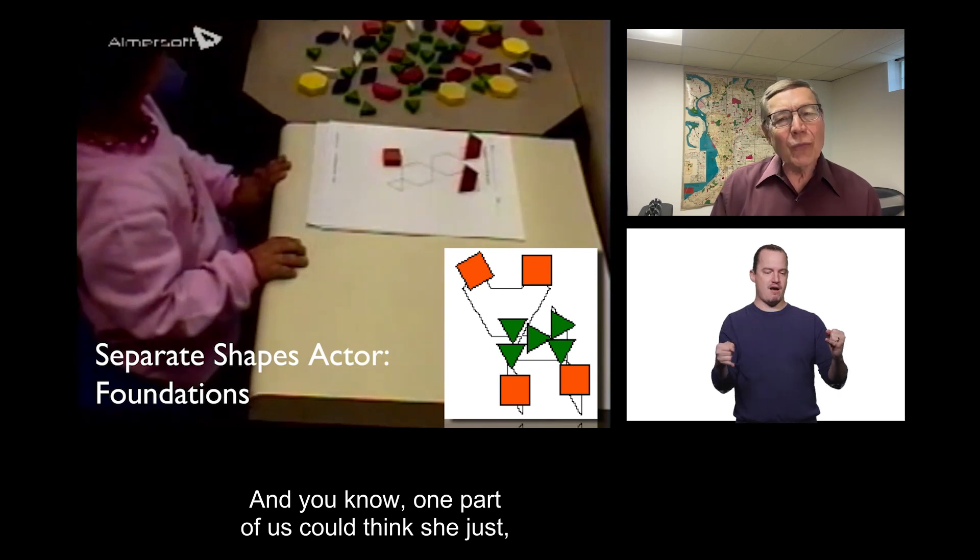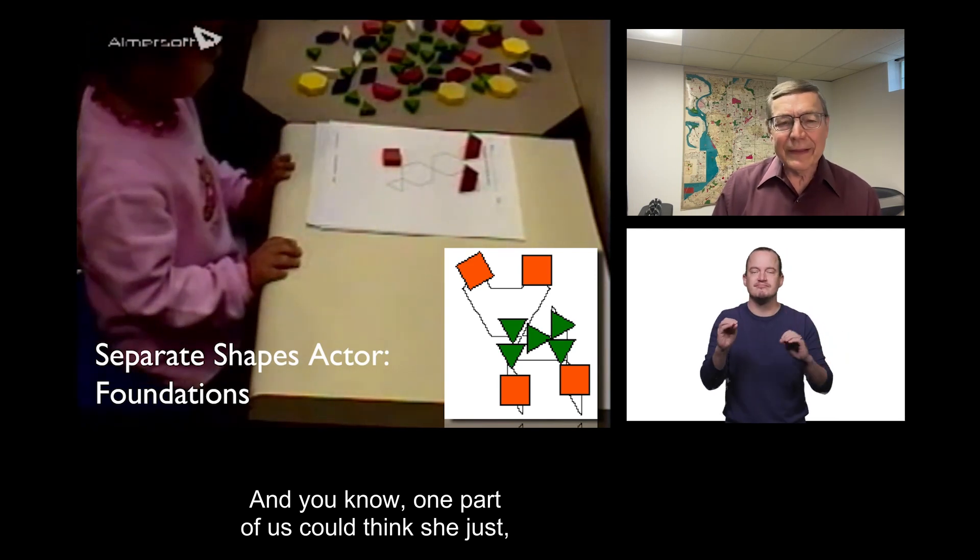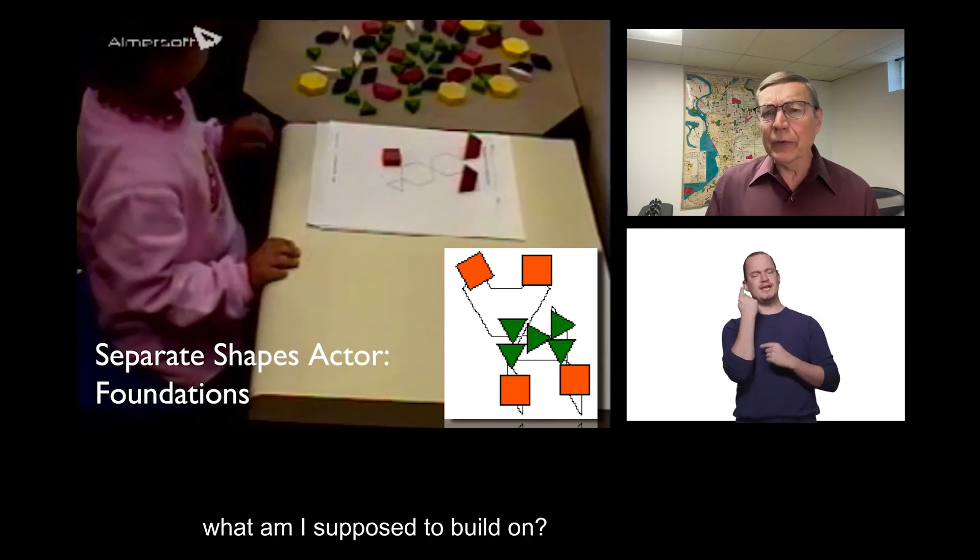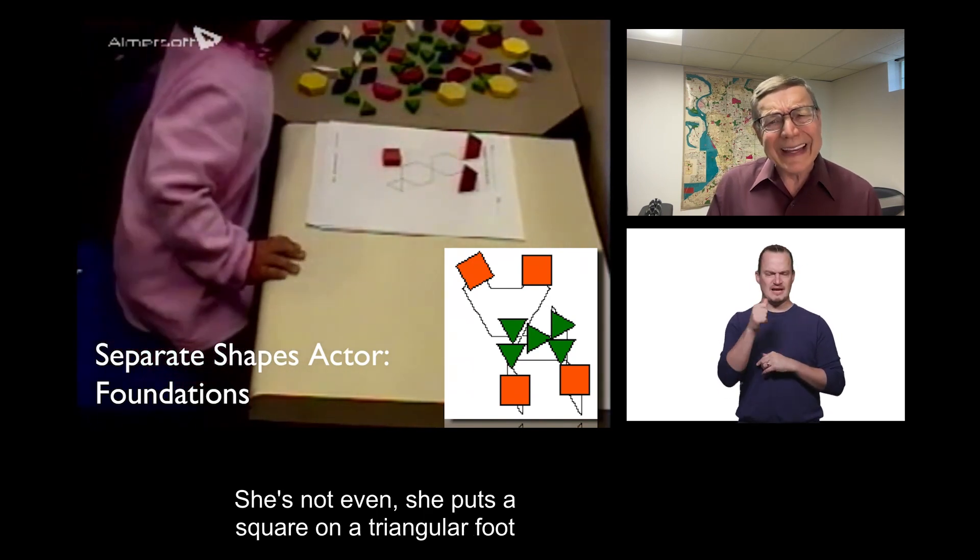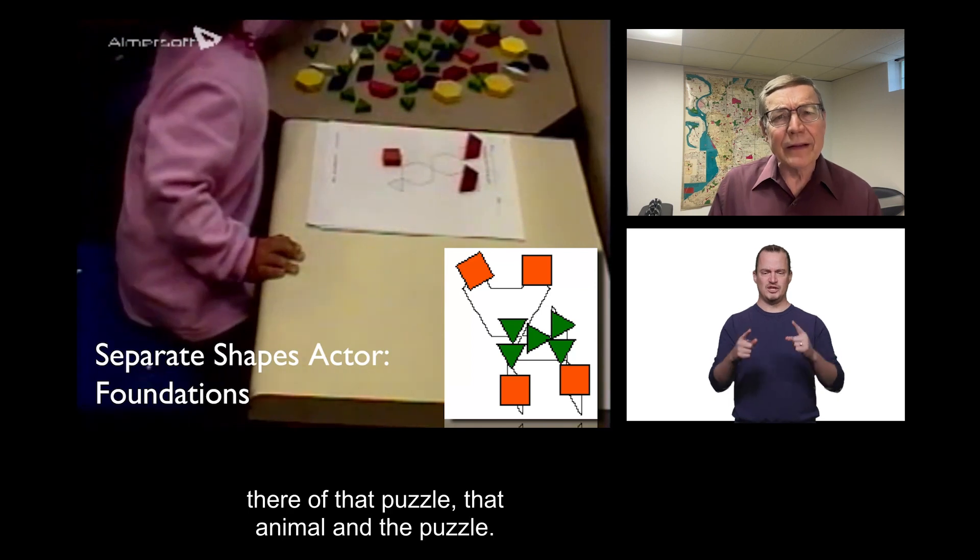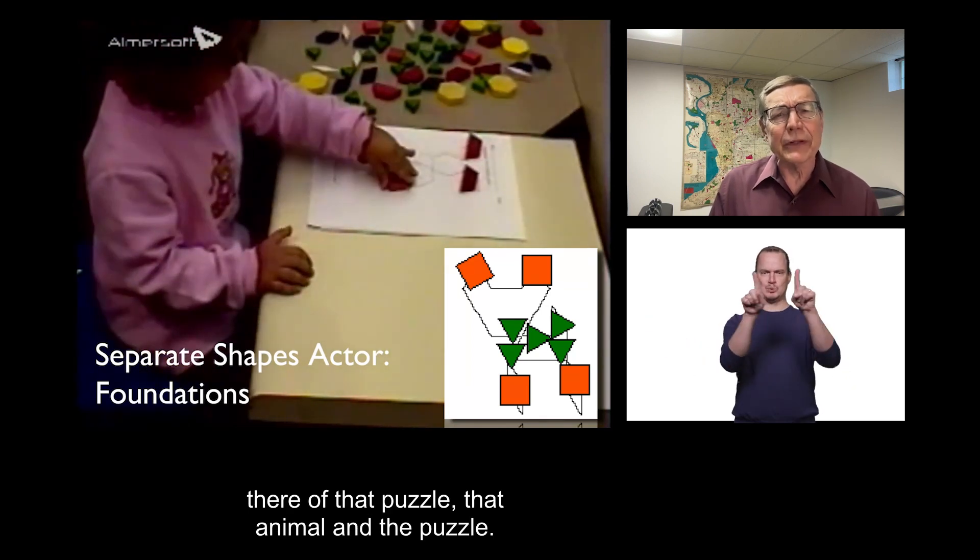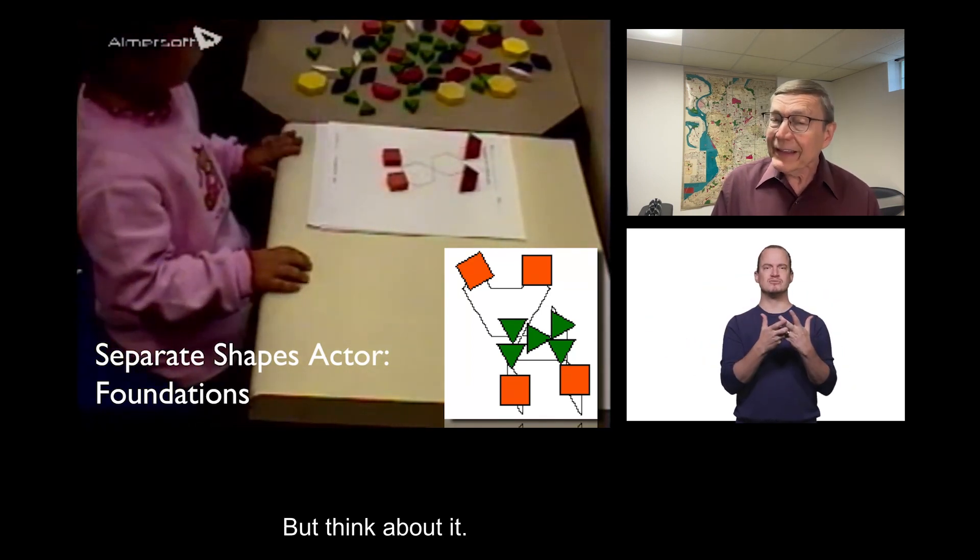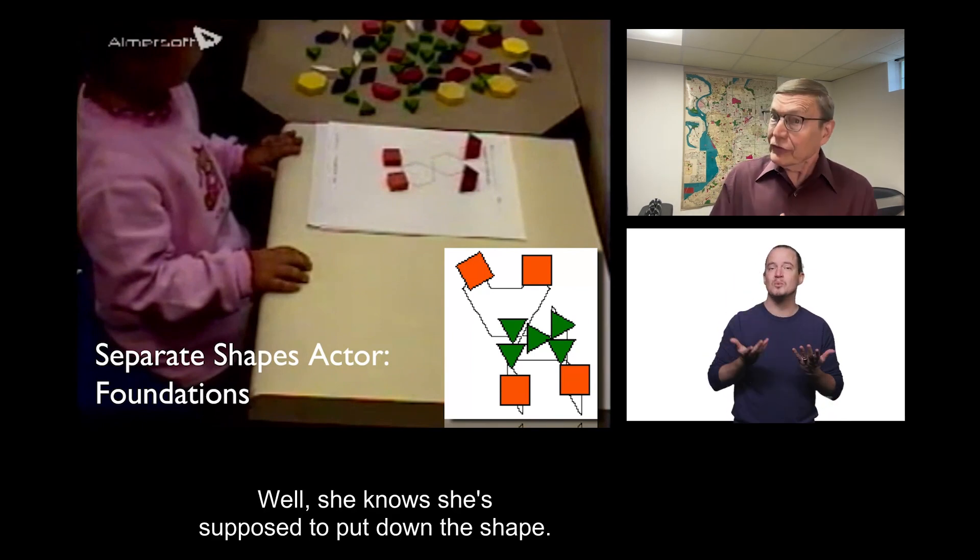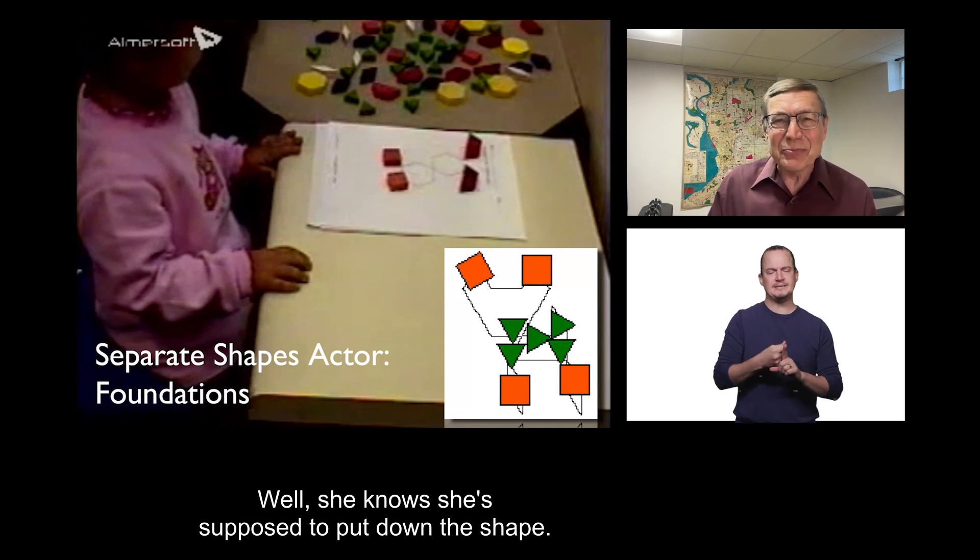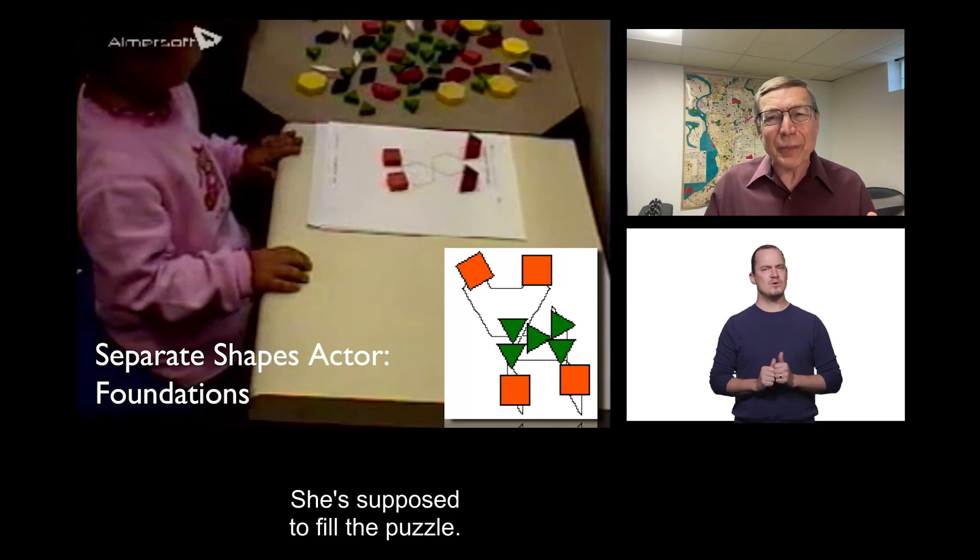I'm just making a few notes here. You go ahead and take whatever pieces you'd like to fill in the puzzle. And if you can see the puzzle she's trying to work on, she is not even matching the shapes to their outline in the puzzle at all. And, you know, one part of us could think, she just, what am I supposed to build on? She's not even, she puts a square on a triangular foot there of that puzzle, that animal in the puzzle.